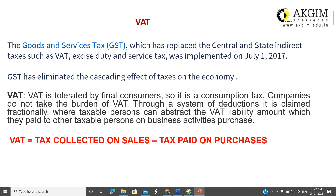Through the system of deduction, the taxable person can offset the VAT liability on materials and consumables used for business purposes. The final VAT liability is calculated as: VAT collected on sales minus VAT already paid on purchases. The tax already paid on purchases is normally known as input tax or input credit. So the company is allowed to take credit for taxes already paid on purchases, and this net liability is the final tax liability.